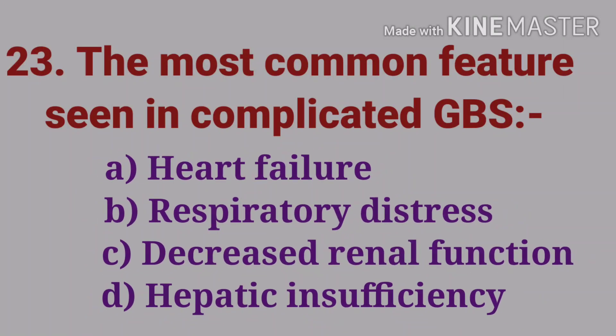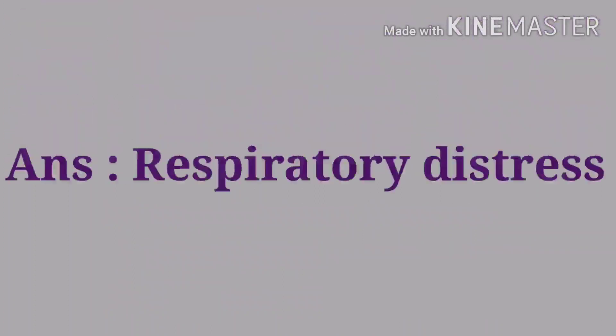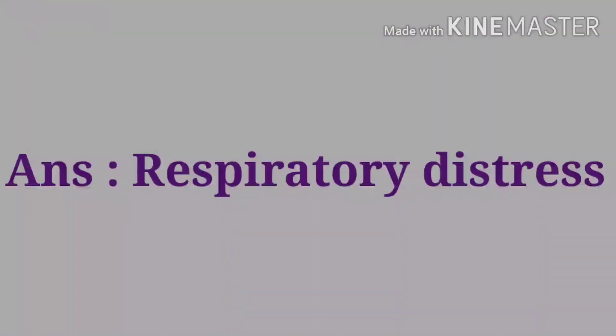Next question: the most common feature seen in complicated Guillain-Barré syndrome — options are heart failure, respiratory distress, decreased renal function, and hepatic insufficiency. The answer is respiratory distress.